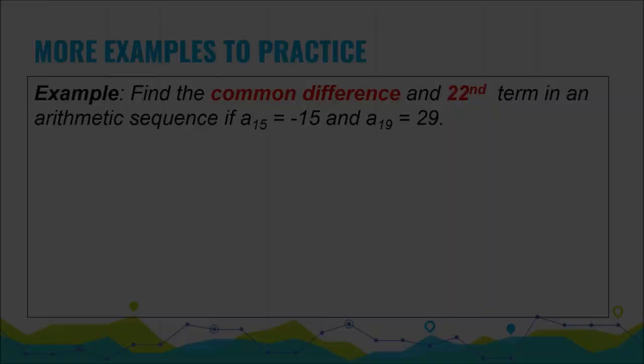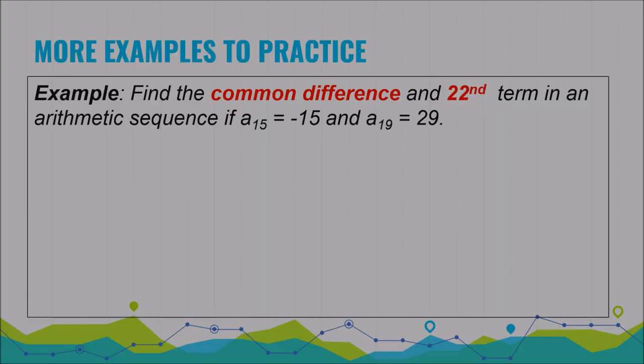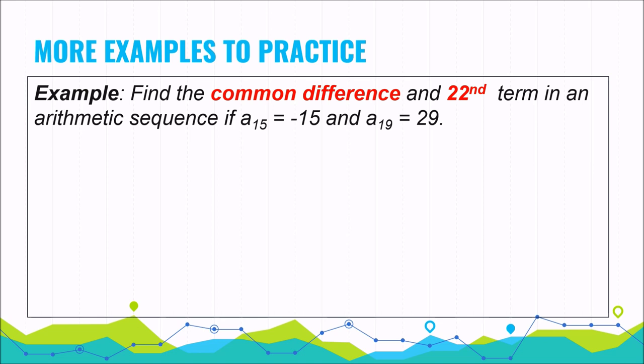Another example: find the common difference and the 22nd term in an arithmetic sequence if a sub 15 equals negative 15 and a sub 19 equals 29. Pause the video and check your answer later.